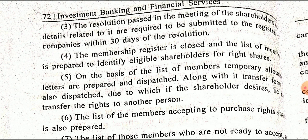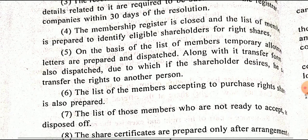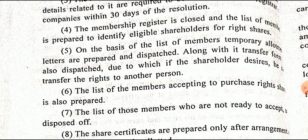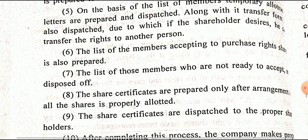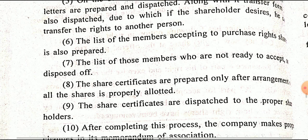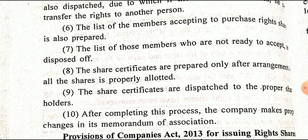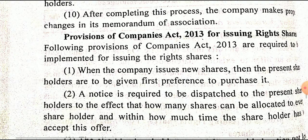The membership register is closed and a list of members is prepared to identify eligible shareholders for the rights. On the basis of the members list, temporary allotment letters are prepared and dispatched along with a transfer form, so that if a shareholder desires, they can transfer the right to another person. The list of members accepting to purchase right shares is also prepared. Those members who are not ready to accept — the shares must be properly disposed of, share certificates are prepared and dispatched after completing this process.